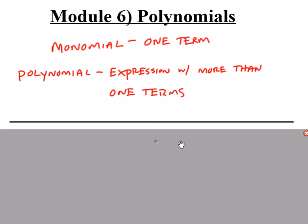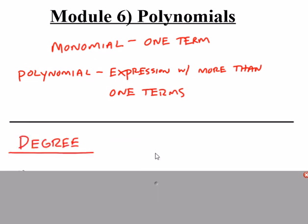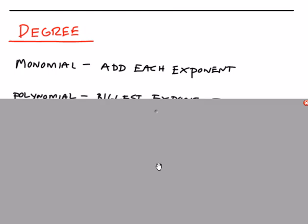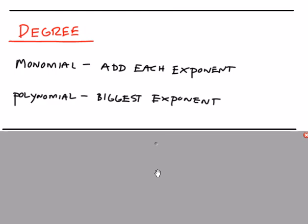Polynomials can be named by their degree, which is their biggest exponent, or they can be named by how many terms they have. If you're going to name the degree of each individual term, you would add each exponent. So if you want the degree of a single term, just add up all the powers, but if you want the degree of the entire polynomial, just pick the biggest exponent.